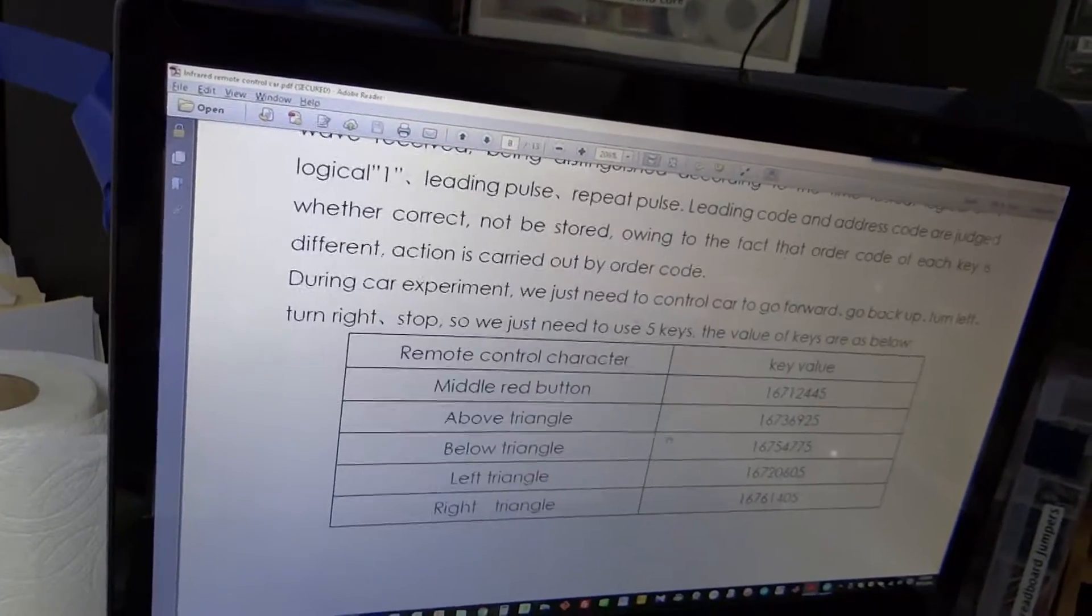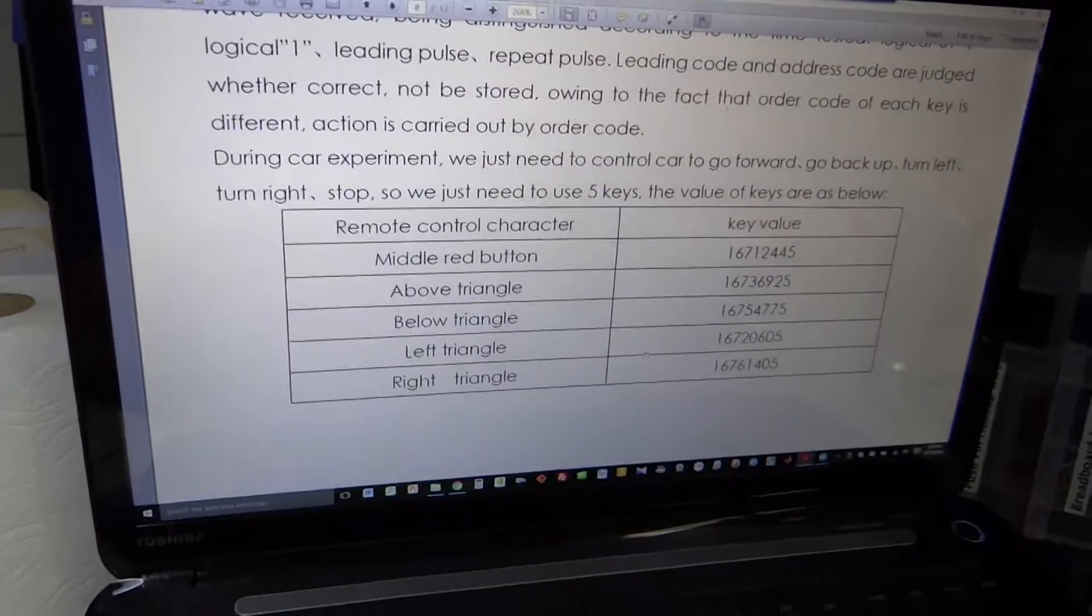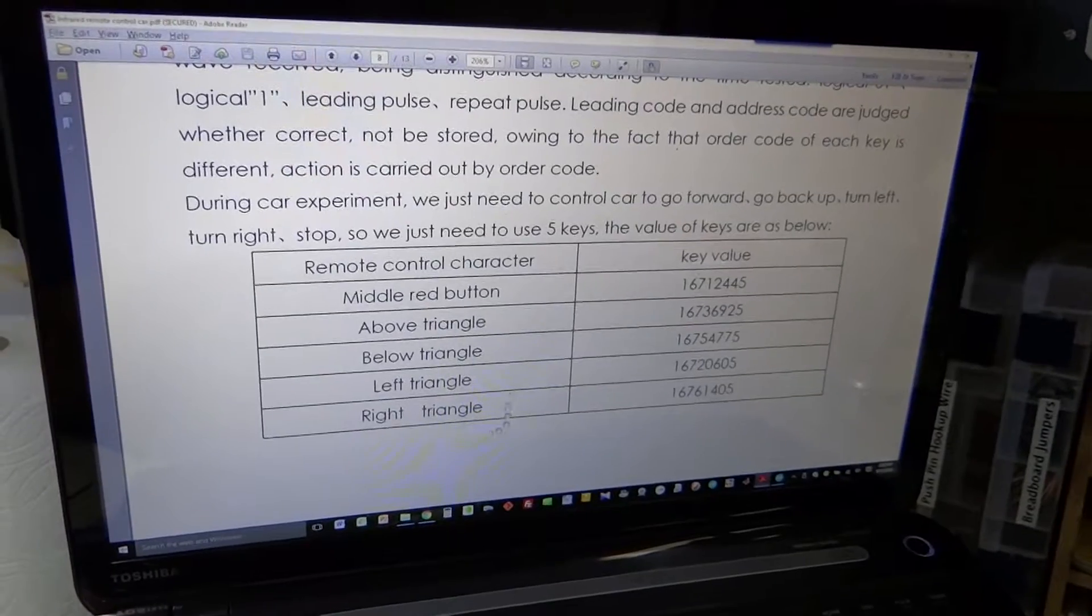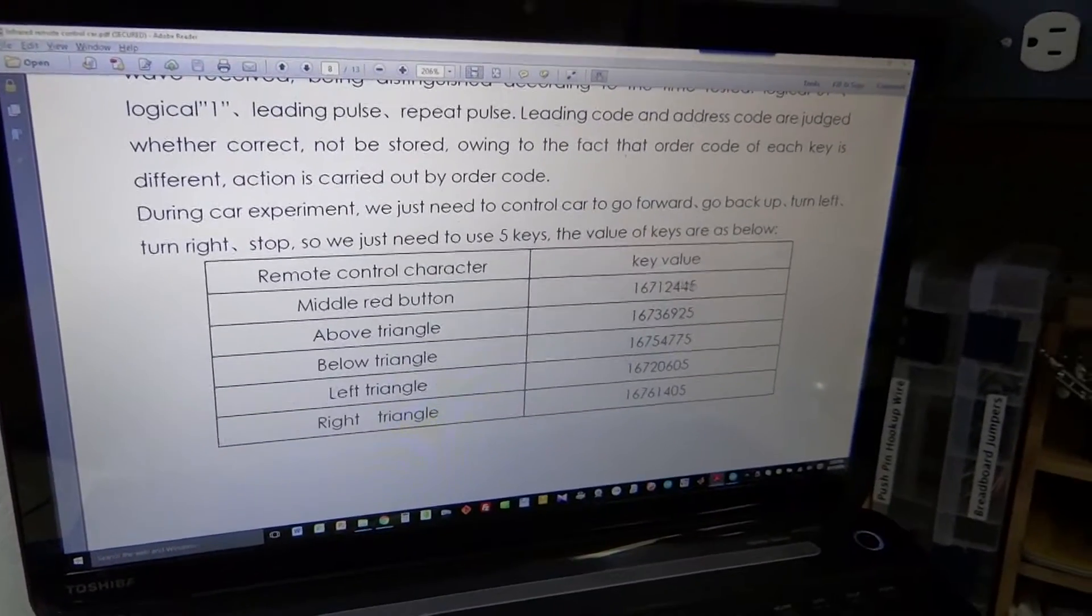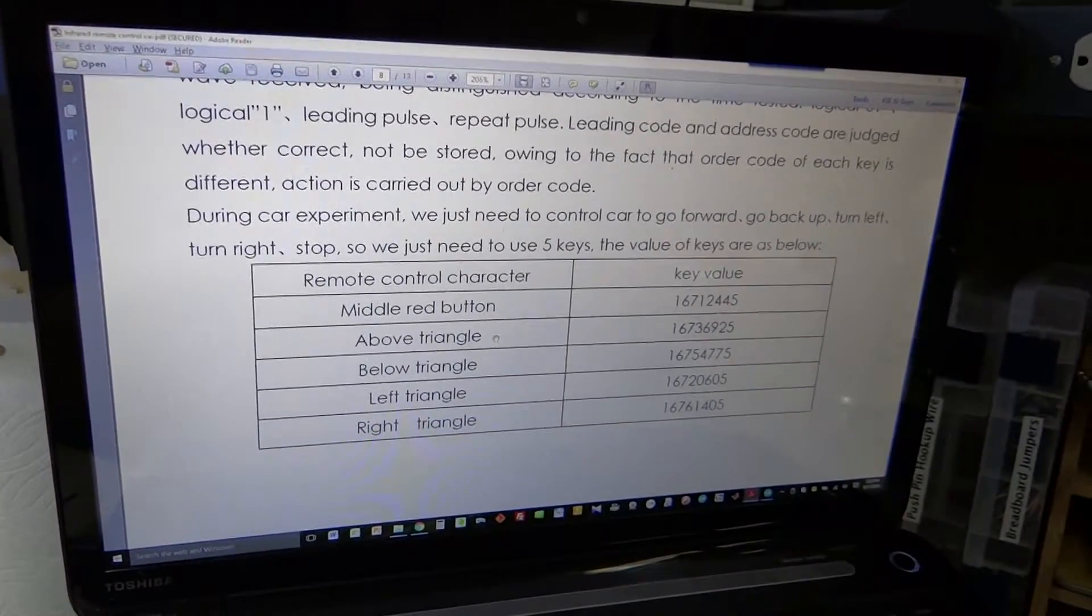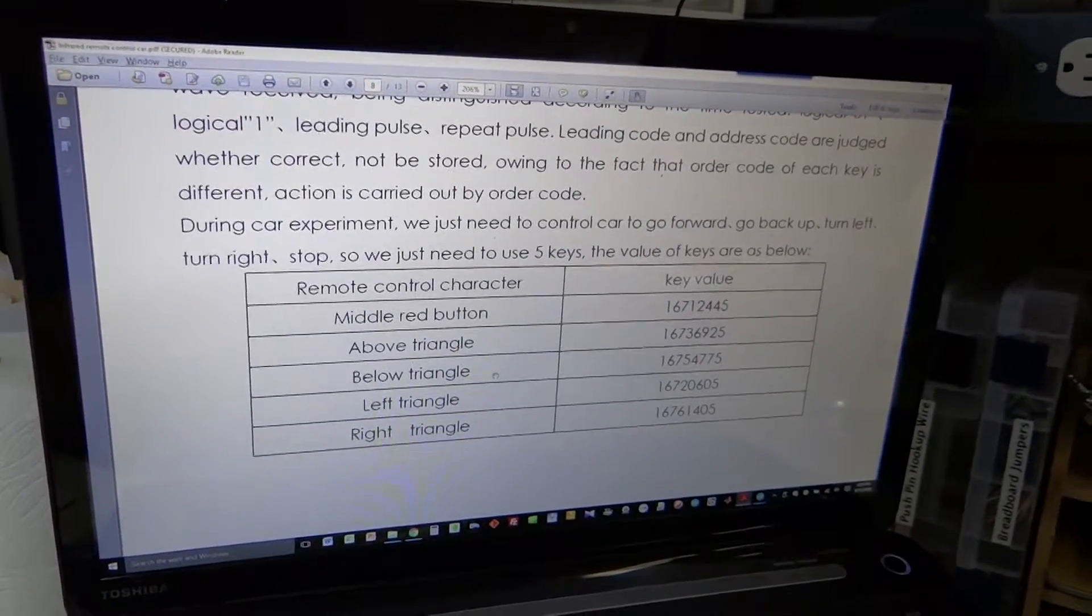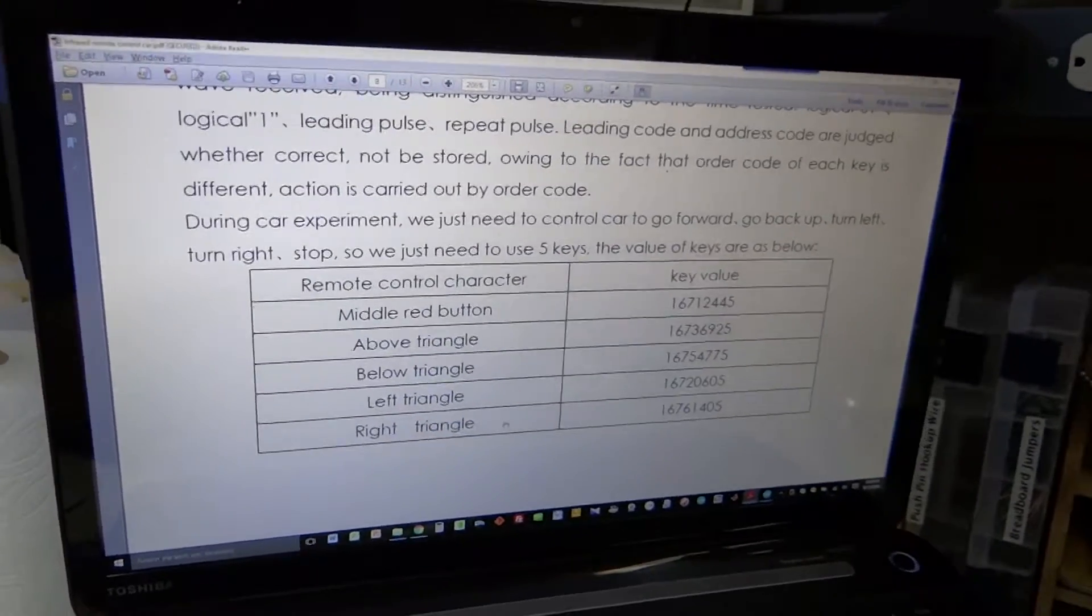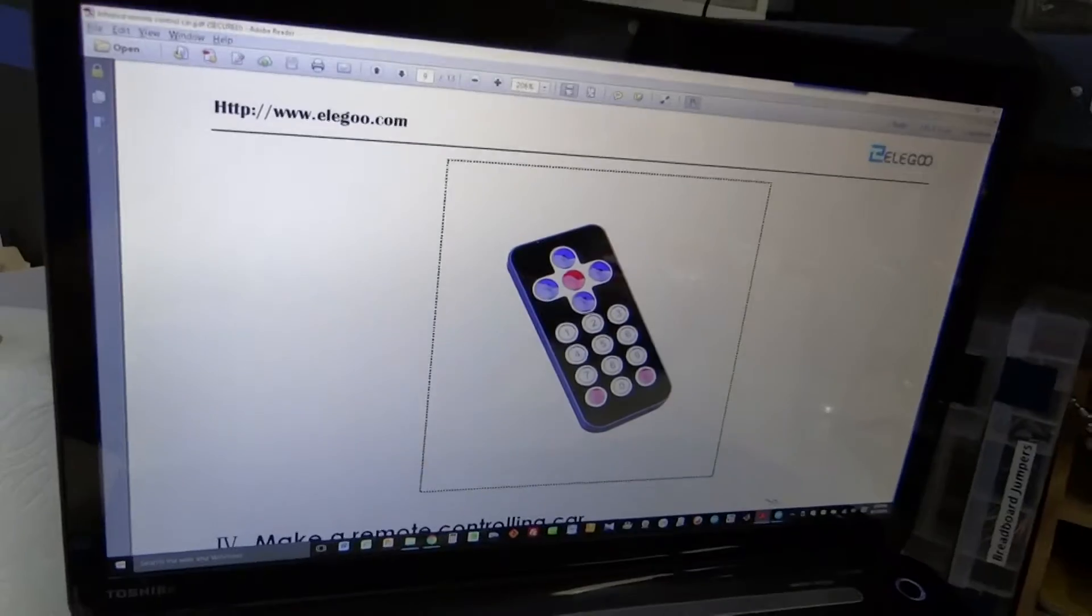The PDF file has a nice convenient value. What they call the middle red button is going to be stop, and this is the key value for stop. Above triangle I would assume is the forward arrow, below triangle is the reverse arrow, left triangle and right triangle. So let's take a look at the code.